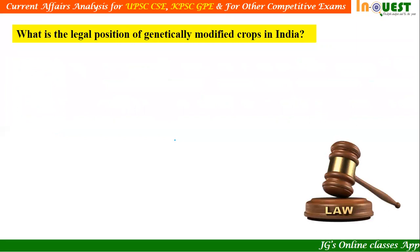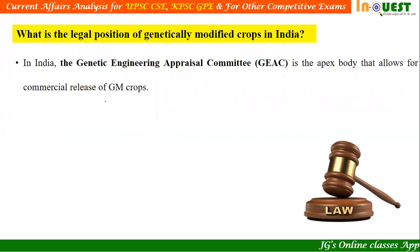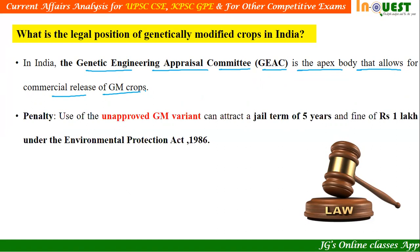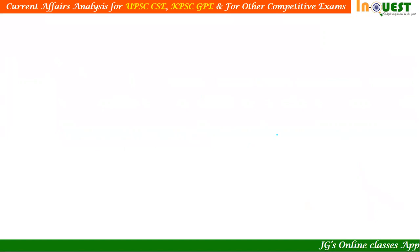Regarding the legal position of GM crops in India: the Genetic Engineering Appraisal Committee (GEAC) is the apex body that allows for commercial release of genetically modified crops. The penalty for use of an unapproved GM variant can attract a jail term of five years and a fine of up to one lakh rupees under the Environmental Protection Act, 1986.